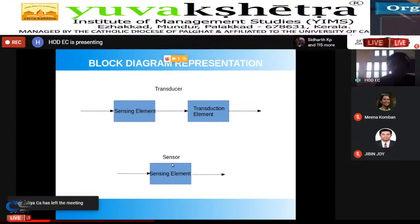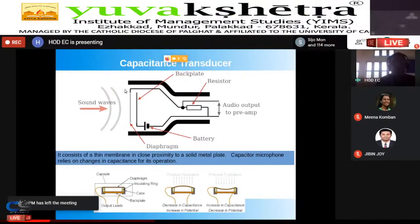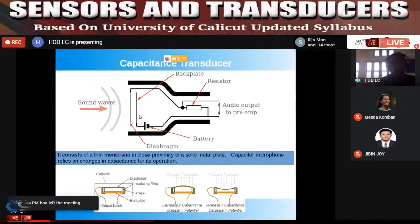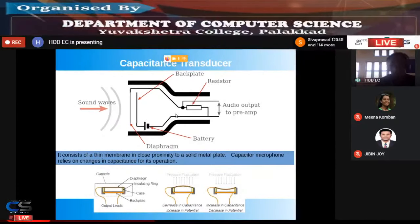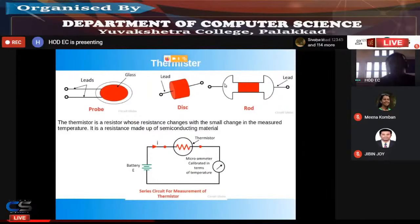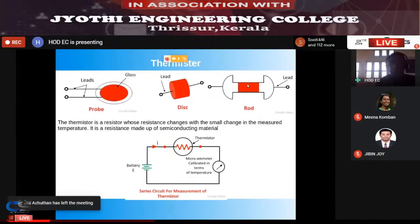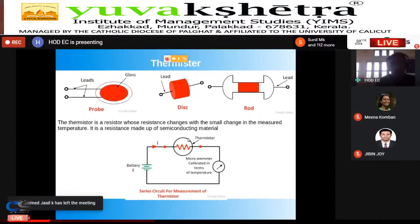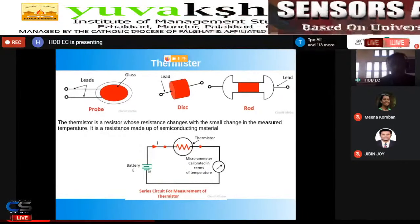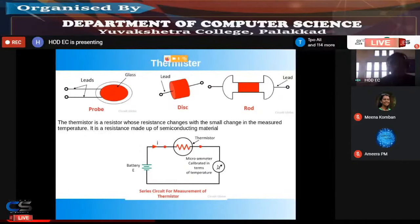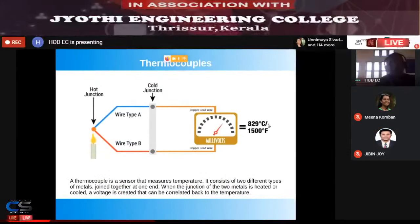In this case, the parallel plate capacitor is our sensor, whereas the sensing element together with the balance circuitry becomes a transducer. Similarly, the thermistor is a sensor, and with additional circuit arrangement to measure temperature difference or use it for another purpose, it becomes a transducer.